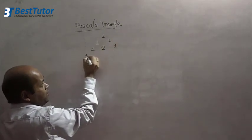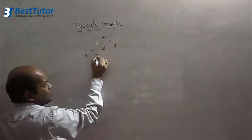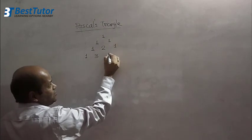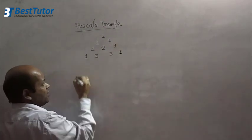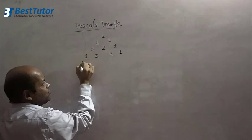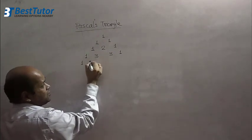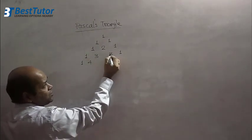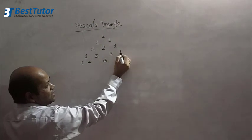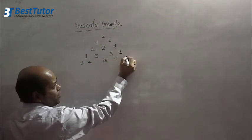Next, 1, 1 plus 2 equals 3, 2 plus 1 equals 3, and then 1. We continue next. We have 1, 1 plus 3 equals 4, 3 plus 3 equals 6, 3 plus 1 equals 4, and 1.